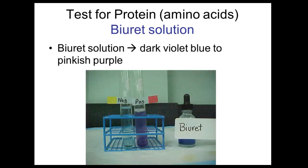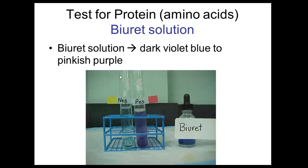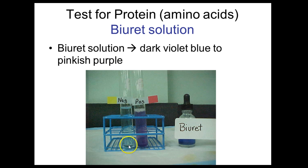Now our test for proteins: the biuret solution actually tests for peptide bonds between amino acids. Biuret solution is normally blue. If you placed it with stomach contents and proteins were present — say your victim ate chicken the night before — you would get a dark violet-blue to pinkish-purple color. But if it were negative, with no protein present, it would remain the bluish color of the biuret solution.